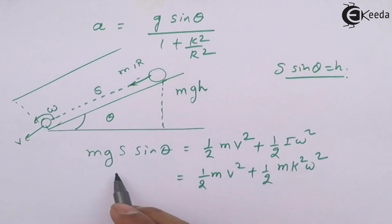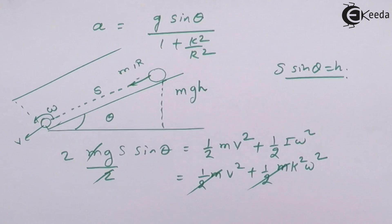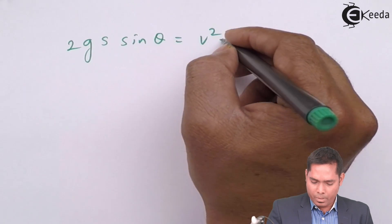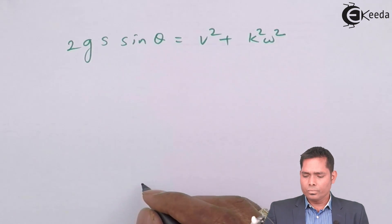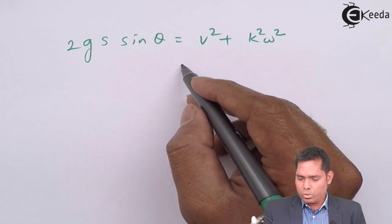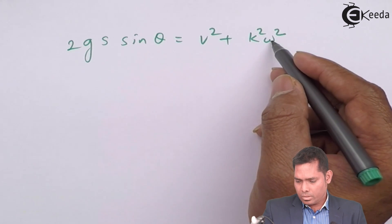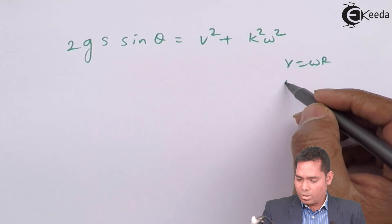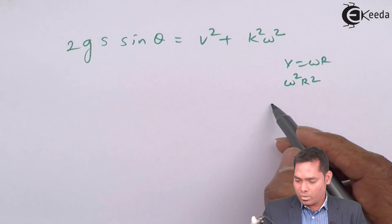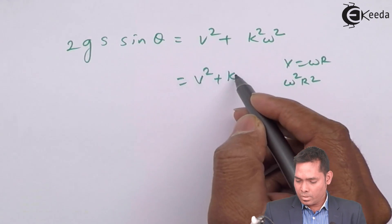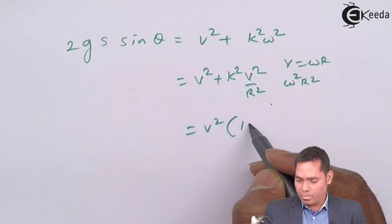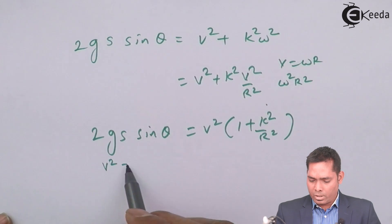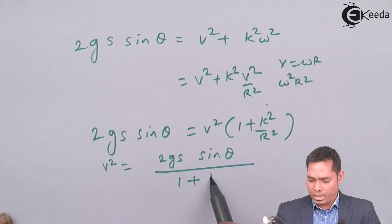After cancelling m and simplifying, we get 2g s sinθ = v² + k²ω². Since v = ωr, we have ω = v/r, so this becomes 2g s sinθ = v² + k²(v²/r²) = v²(1 + k²/r²). Therefore, v² = 2g s sinθ / (1 + k²/r²).